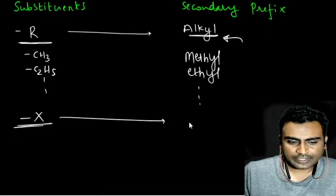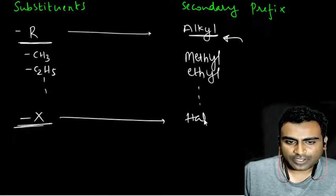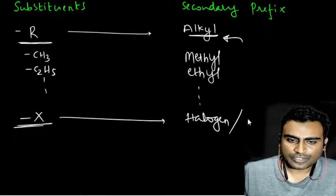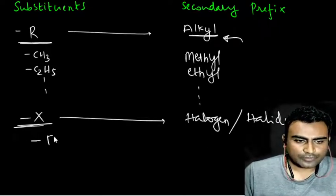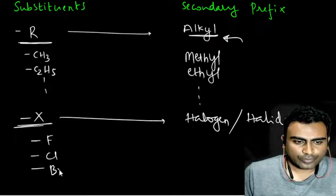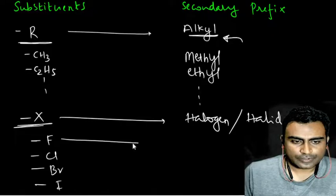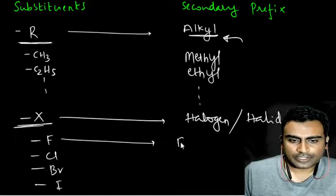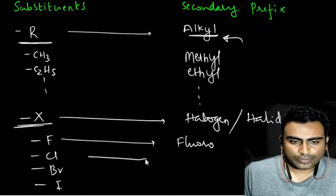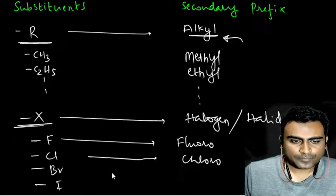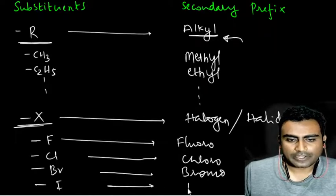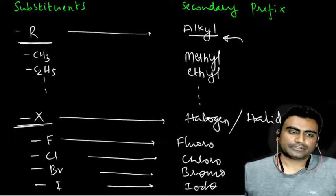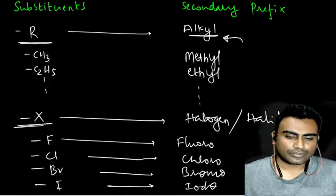Then comes another group — halogens, also called halides. So here we have fluorine, chlorine, bromine, and iodine as secondary prefix groups.